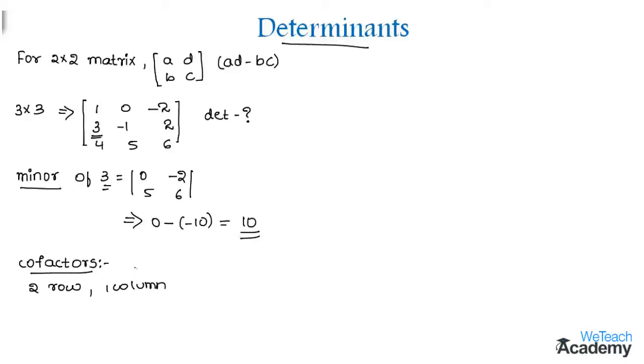So in order to find the cofactor of an element we need to multiply minus 1 whole power i which represents rows and here it is 2. So we get 2 plus of j that represents columns which is 1 into its minor element 10. So that implies here we get minus 1 whole power 2 plus 1 which is 3 into 10. And then here minus 1 whole power 3 becomes minus 1 again. So minus 1 into 10 which is minus 10 again. So minus 10 is the cofactor of the element 3.